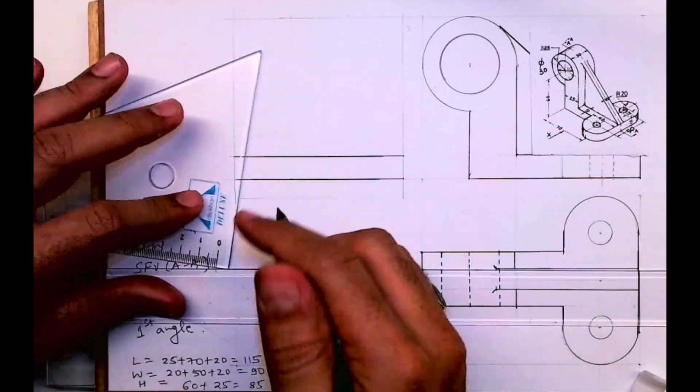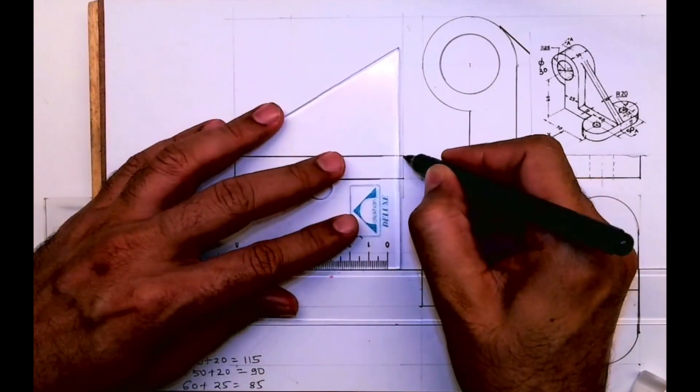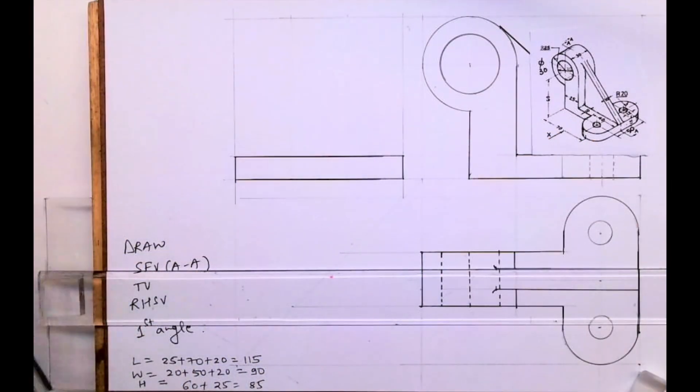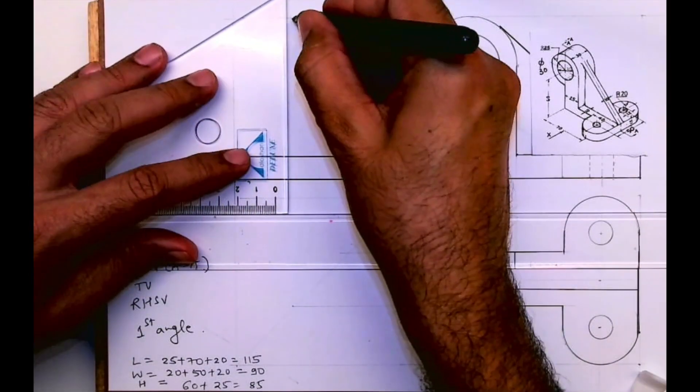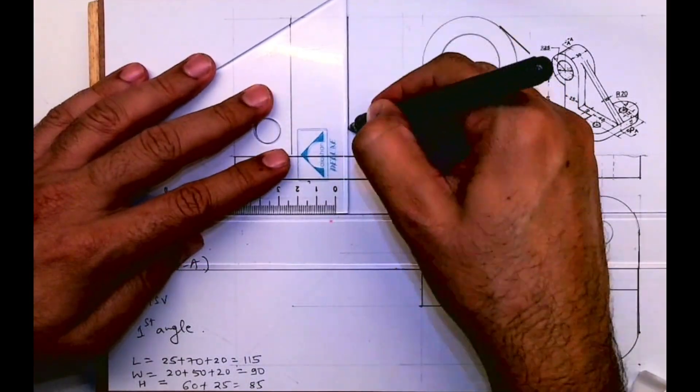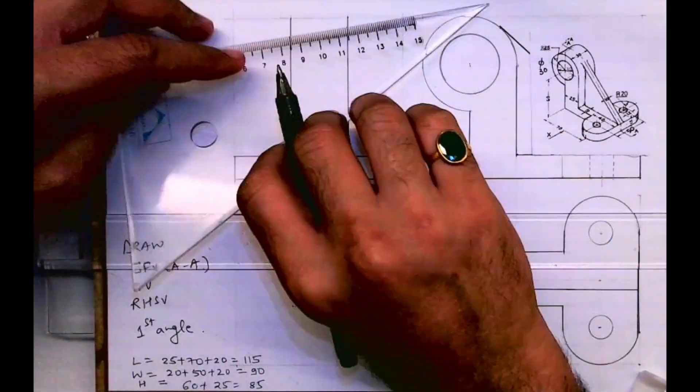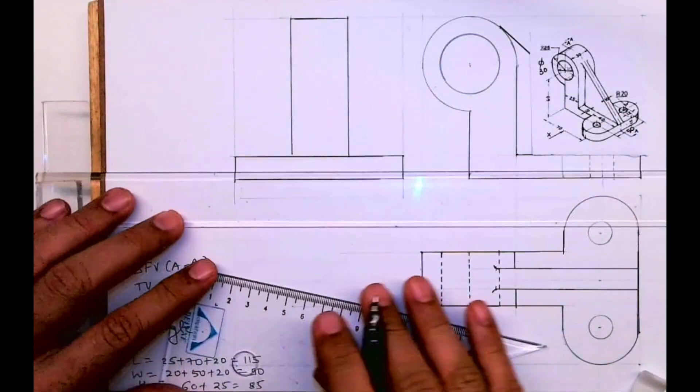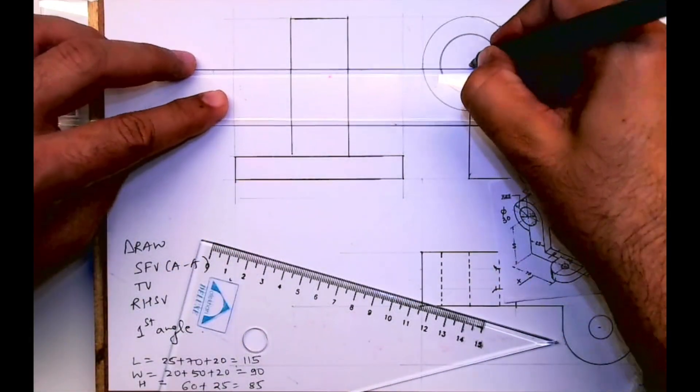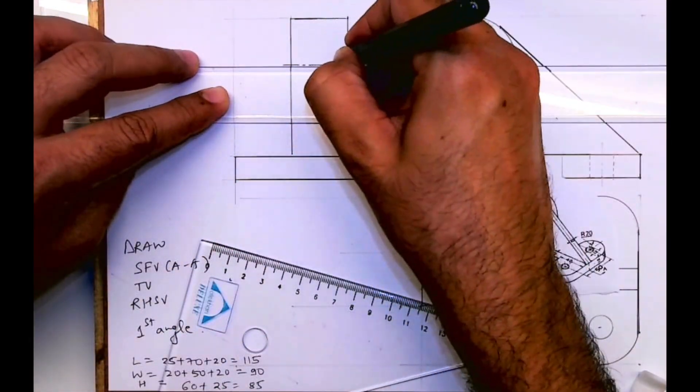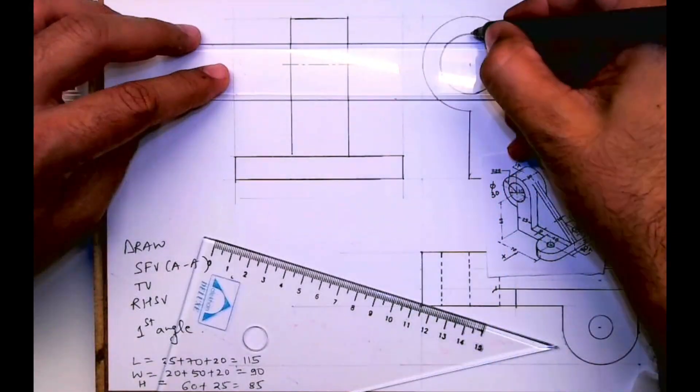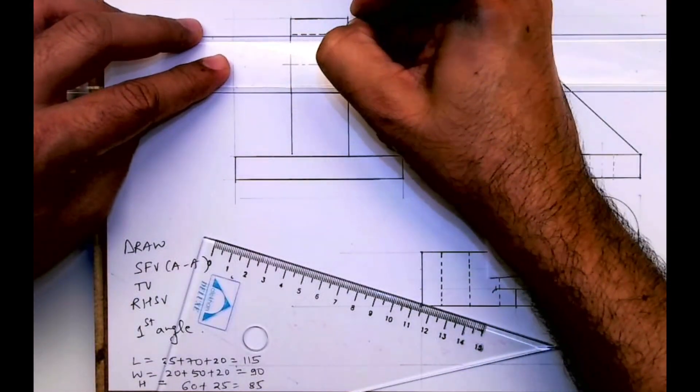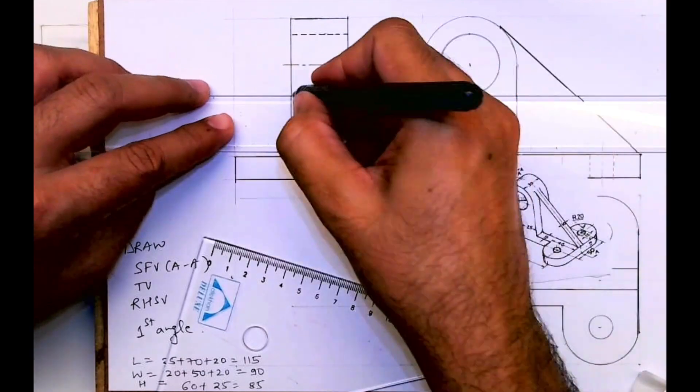Now this will be full dark. This will be dark, it will be rectangle. This is axis line and dotted line for the circle, extreme top part as well as bottom part.